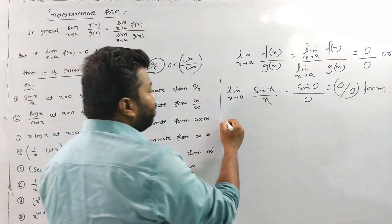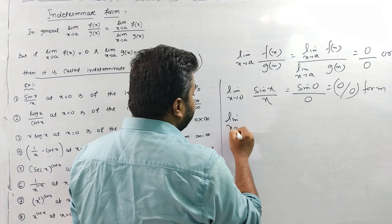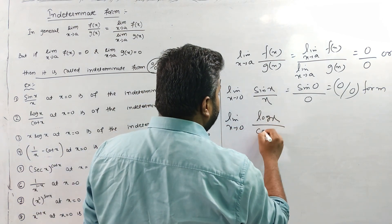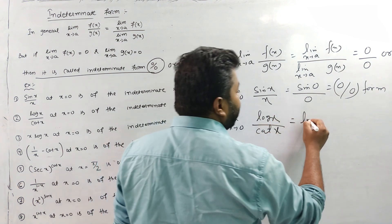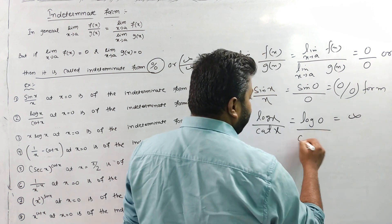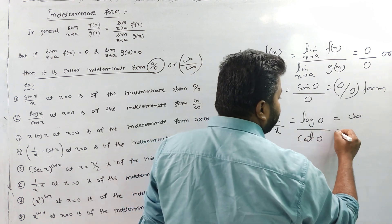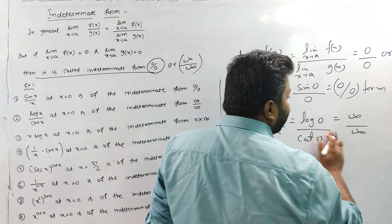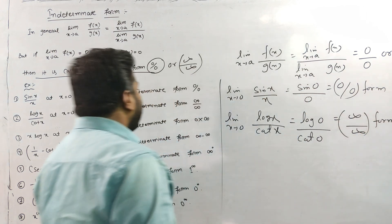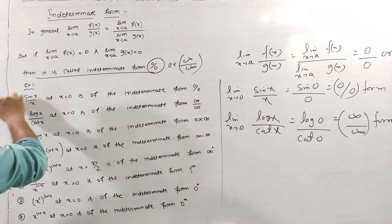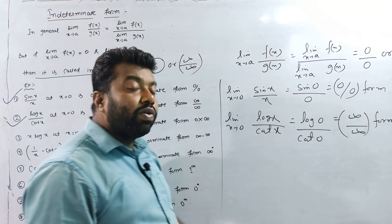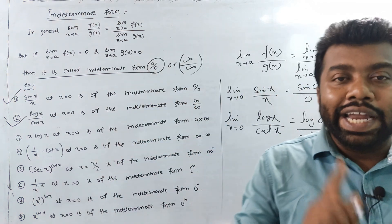Let's see: limit x tends to 0 of log(x) by cot(x). If we put log(0), it is infinite. And cot(0) is also infinite. So this is the ∞/∞ form — the infinite by infinite indeterminate form. So these are the 0/0 form and the ∞/∞ form, both being indeterminate forms.